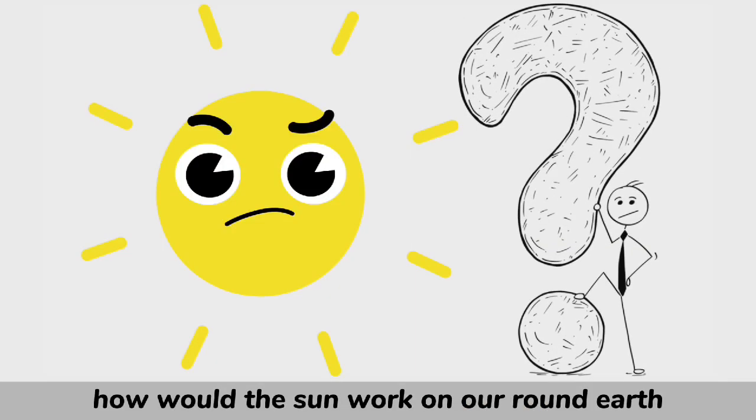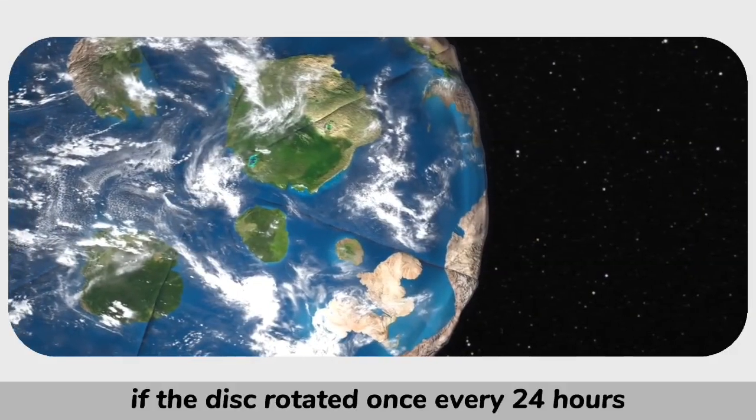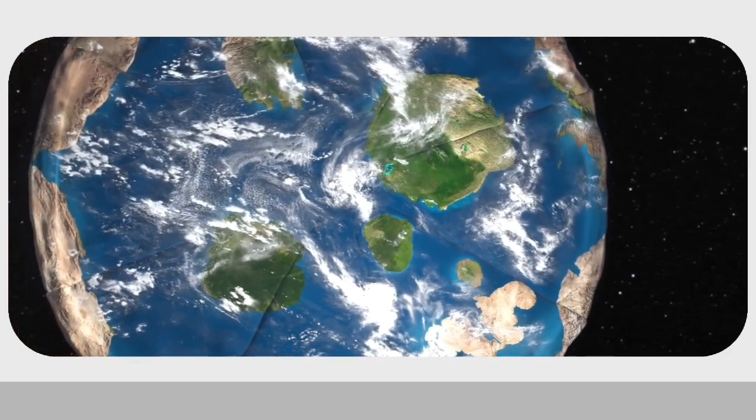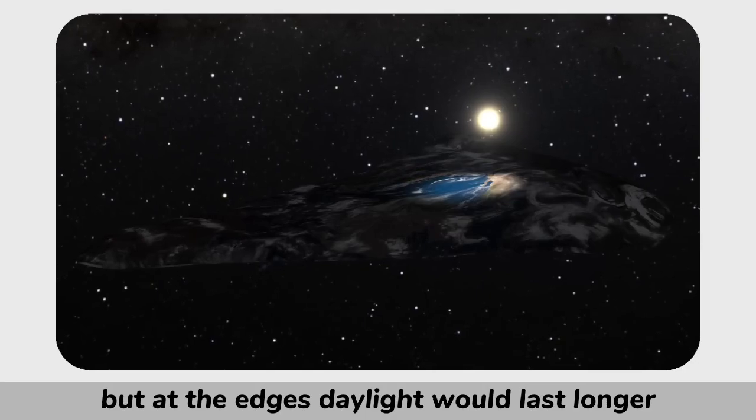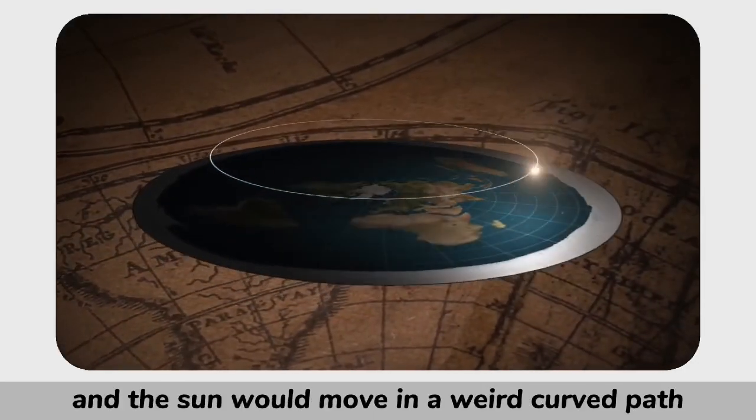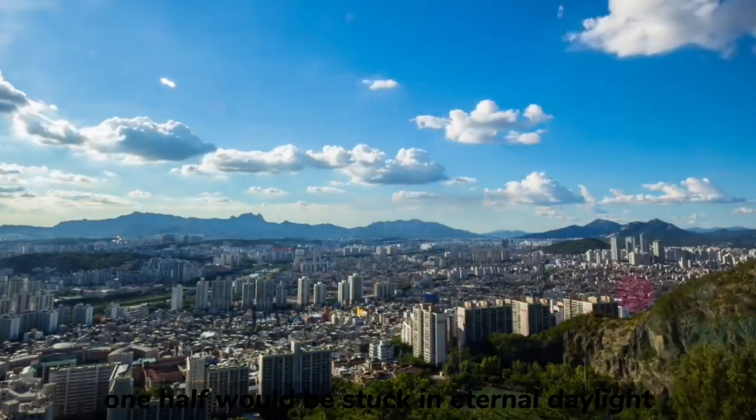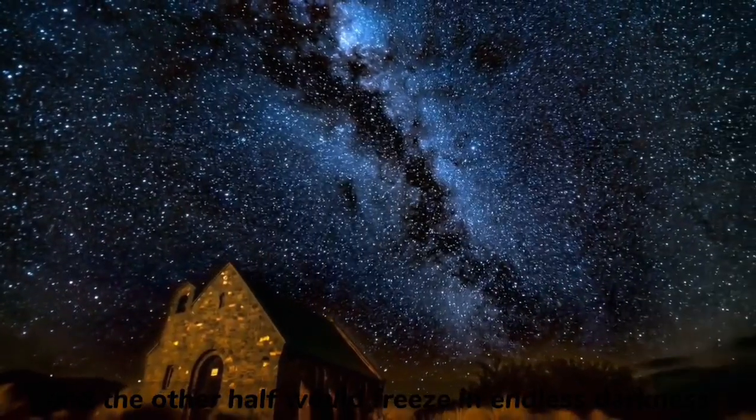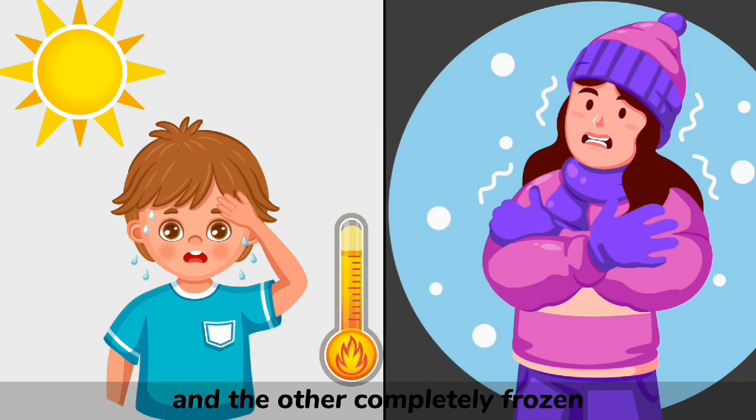How would the sun work? On our round Earth, the planet spins, giving us day and night. But on pizza Earth, if the disk rotated once every 24 hours, the sun would rise and set normally at the center. But at the edges, daylight would last longer, and the sun would move in a weird curved path. If the disk didn't rotate at all, one half would be stuck in eternal daylight, and the other half would freeze in endless darkness. That would make life on one side unbearably hot and the other completely frozen.